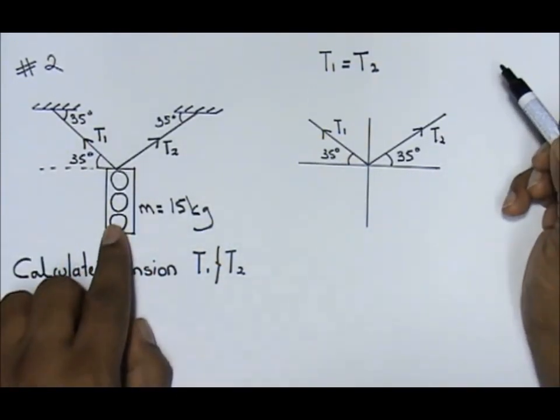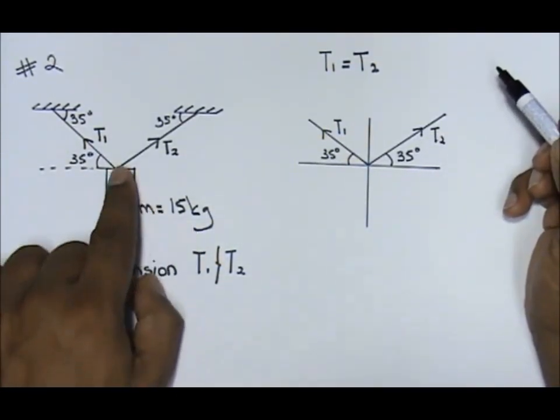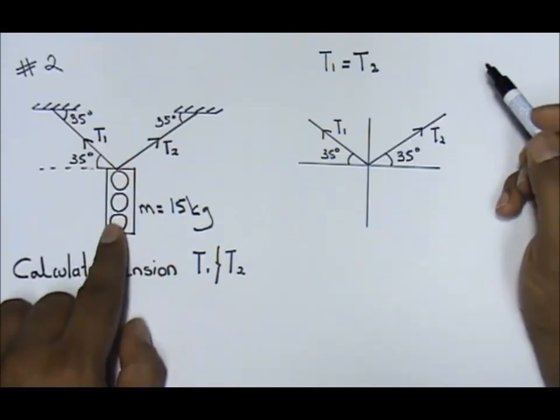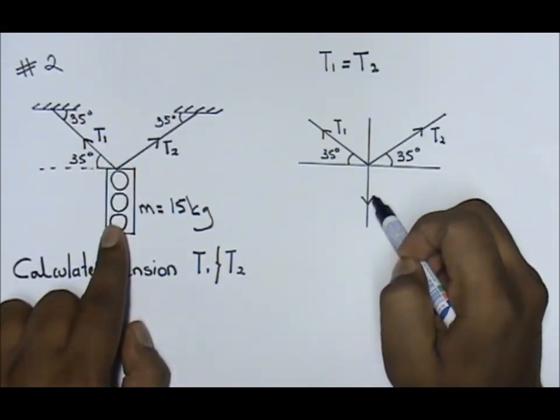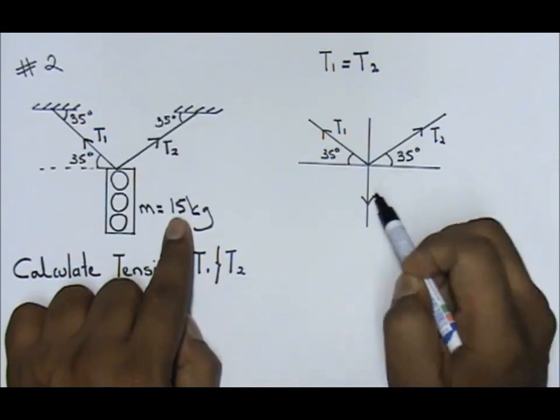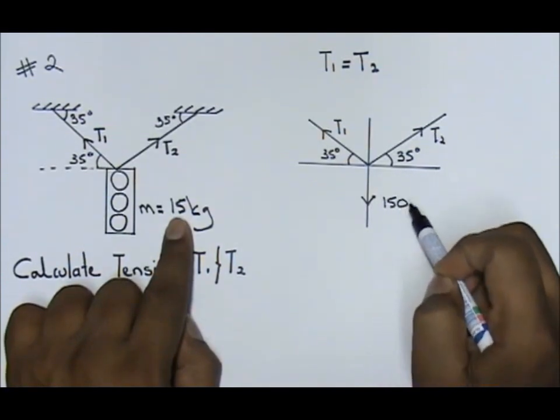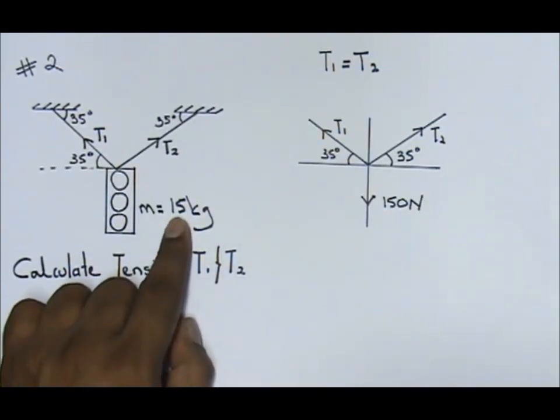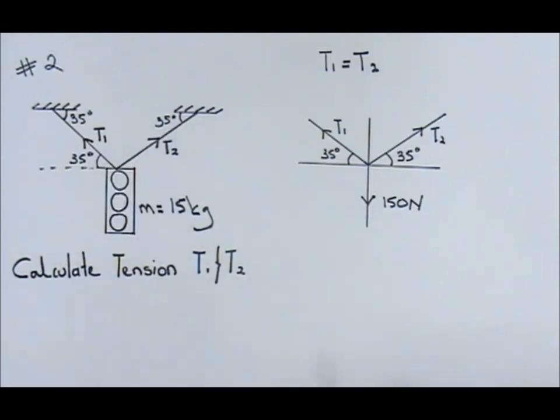Now if you observe, there is a 15 kilogram mass on the traffic light. So here, change it to your weight, and you will have 150 newtons. After this, I want you all to pay attention very carefully.